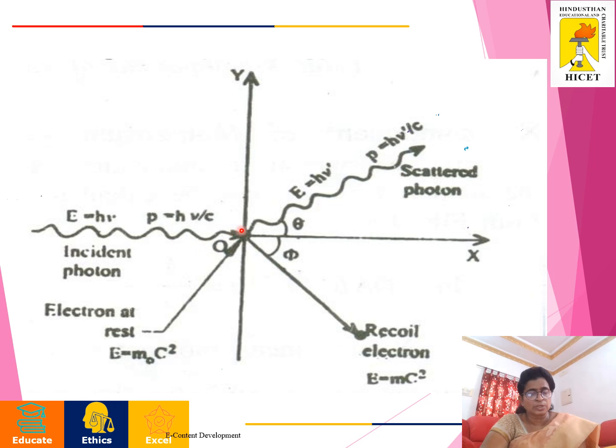Since the electron gains energy, it recoils with a velocity V. This effect is called the Compton effect and the shift of wavelength is called the Compton shift. Thus, as a result, Compton scattering we get unmodified radiation, scattered photon and recoil electron.